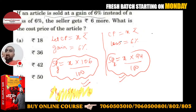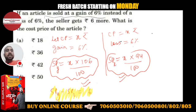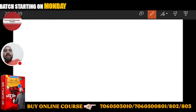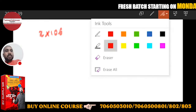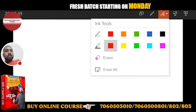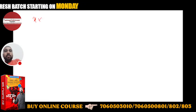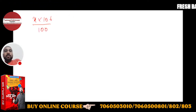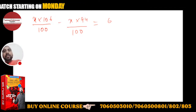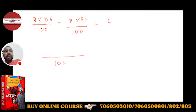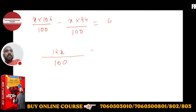Saari values daalo: X × (106/100) − X × (94/100) = 6. LCM 100 hai, so: 106X − 94X = 600. Therefore 12X = 600. X nikaal lo — CP aa jayega.